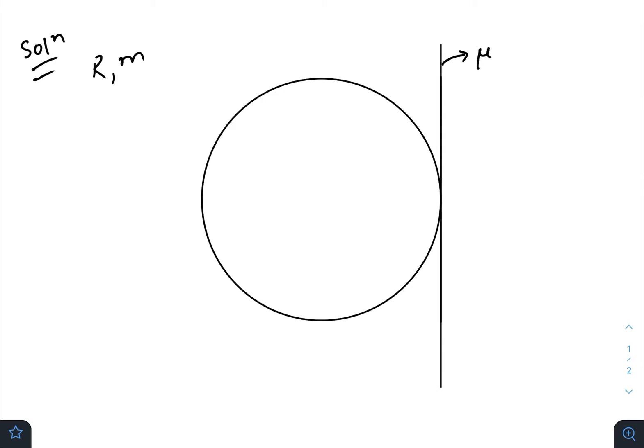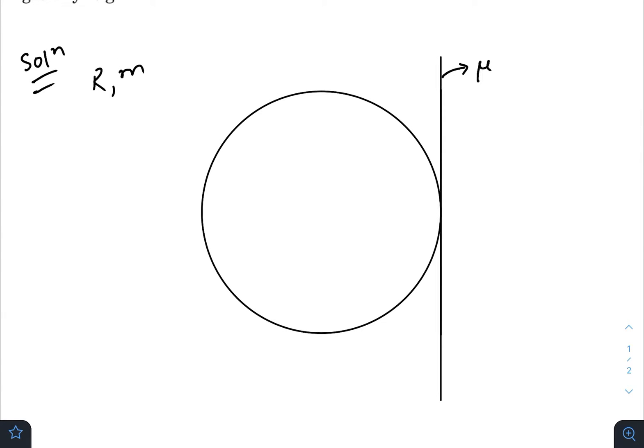Mass is m. We need to find out the minimum force required to move it upwards. As we know, for minimum force, the force must be in pulling mode. That means you should not push the block, you should pull the block.